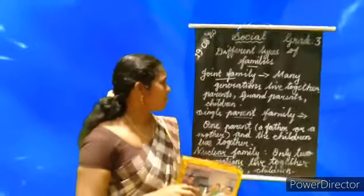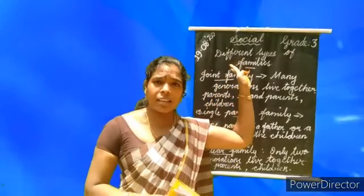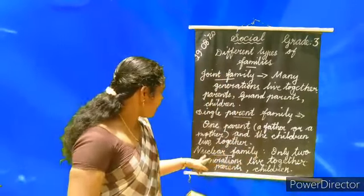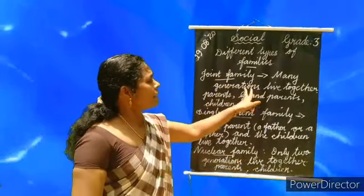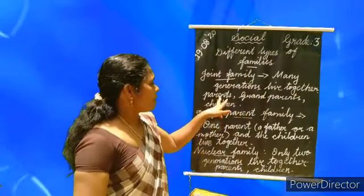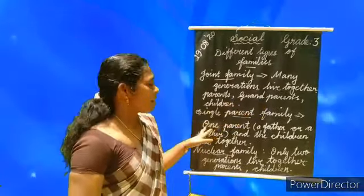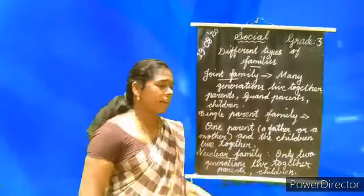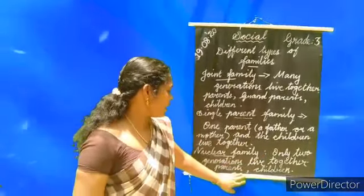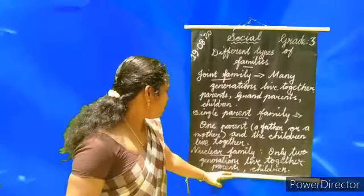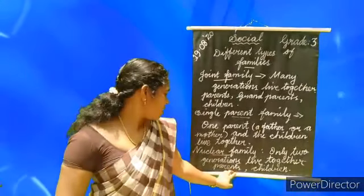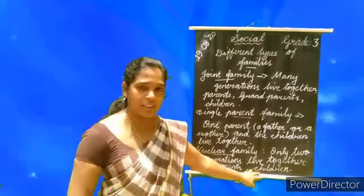Let me repeat. Three different families: joint family, single parent family and nuclear family. Joint family — many generations live together, parents, grandparents and their children. Single parent family — a father or a mother and the children live together. Nuclear family — only two generations live together, parents and their children.